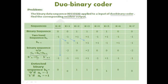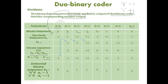The input sequence starts at k equal to zero and ends at k equal to seven — eight bits total. The same data is written here: zero, zero, zero, one, one, zero, one, zero, zero. Binary zero is represented as minus one and binary one is represented as plus one, applied consistently across all steps.